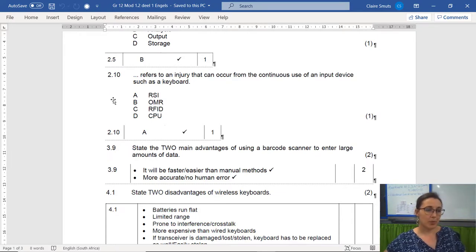3.9, the fact that it is numbered 3.9 and it's not a true or false question shows you that it's from a very old paper. But I still thought to include it because it's a good question to show you how to answer a specific question like this in terms of using the right words. State the two main advantages of using a barcode scanner to enter large amounts of data.